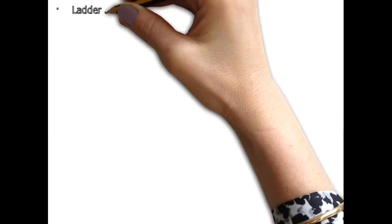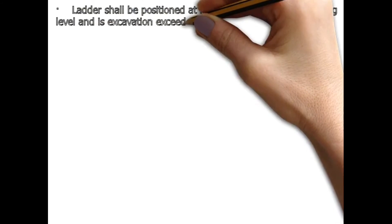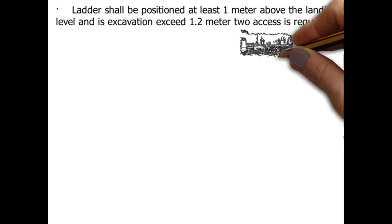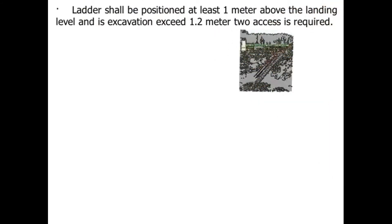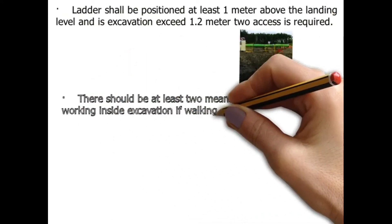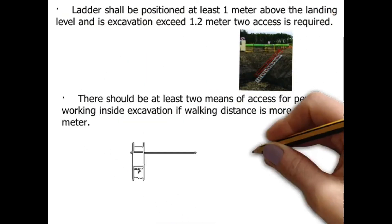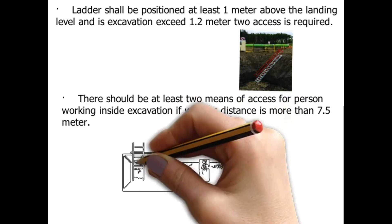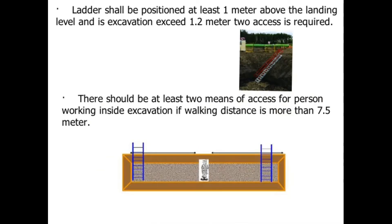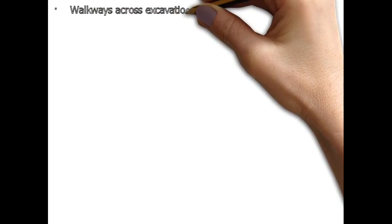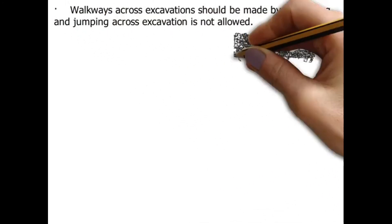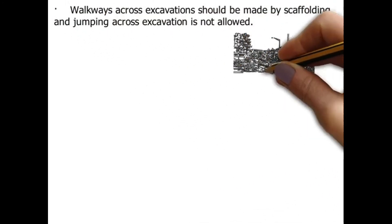Ladder shall be positioned at least one metre above the landing level. If excavation exceeds 1.2 metres, access is required. There should be at least two means of access for persons working inside excavation if the walking distance is more than 7.5 metres. Walkways across excavations should be made by scaffolding; jumping across excavation is not allowed.